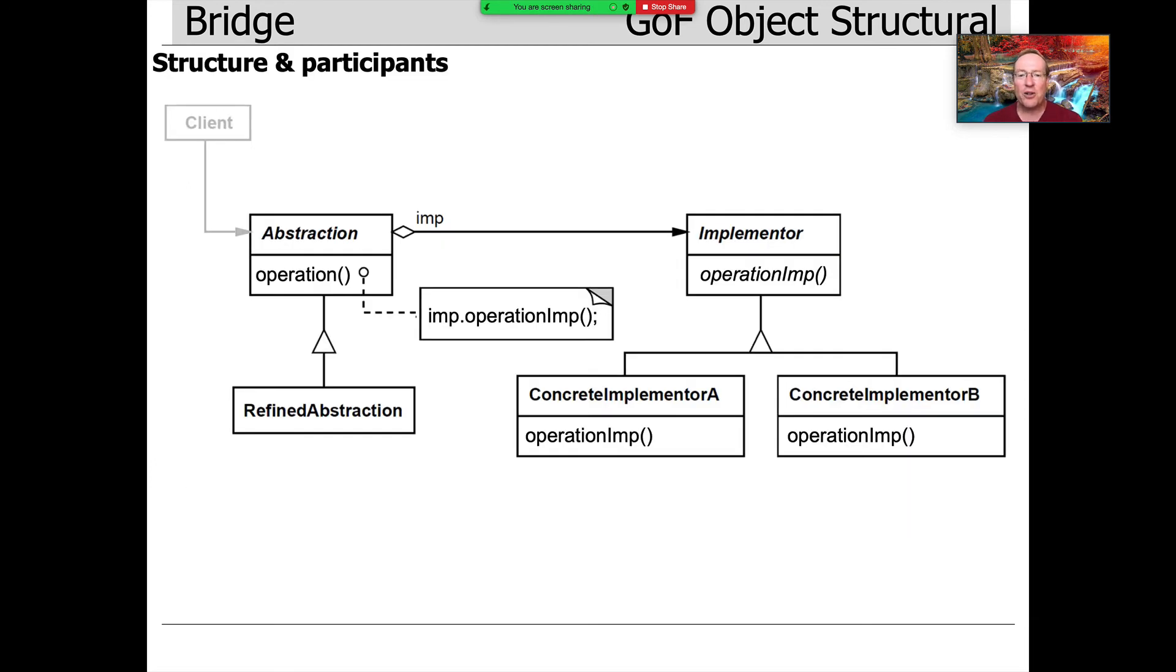This is what the pattern looks like from a structure and participant point of view. This is what you find in the Gang of Four book. We have an abstraction, which is what the client sees. In our example, it's the expression tree class.